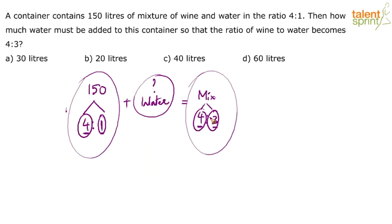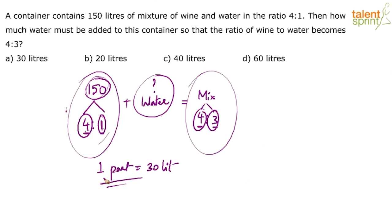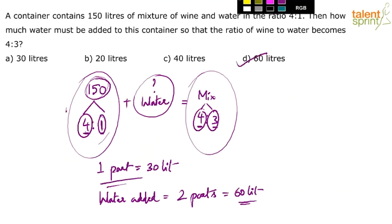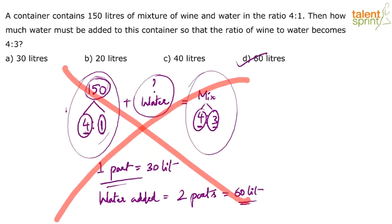How do you find what those 2 parts are? Simple. Total quantity is 150 liters initially, divided in a 4 is to 1 ratio — that's 5 total parts. If 150 liters is divided into 5 parts, then 1 part equals 30 liters. We know that water added equals 2 parts. If 1 part is 30 liters, then 2 parts would be 60 liters. So the answer is 60 liters. When you solve it in the exam, you can just look at the values: 150 liters at 4:1 means each part is 30 liters. Comparing 4:1 and 4:3, water increased by 2 parts, so the answer is 2 × 30 = 60 liters — in about 8 to 10 seconds.